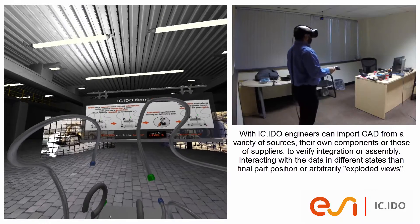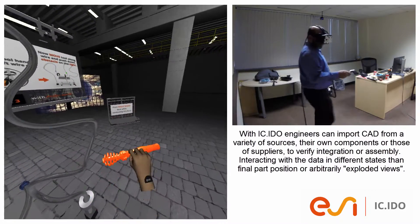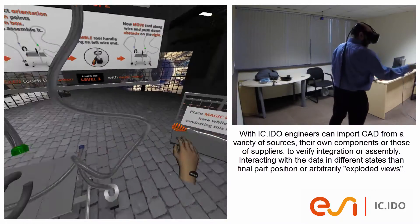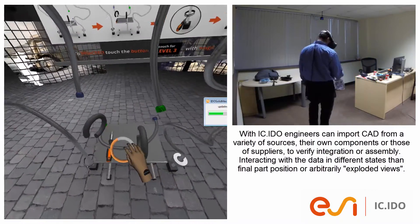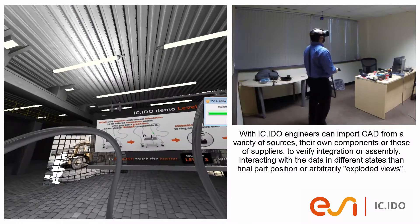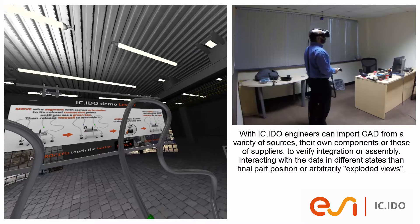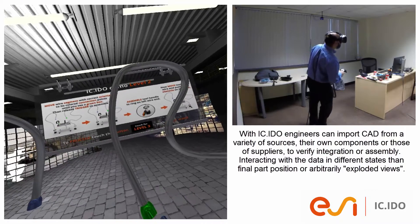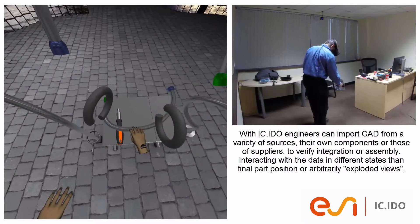What if you had to validate disassembly of an alternator or a washer fluid bottle without having a physical prototype? With ICI-DO, engineers can import CAD from a variety of sources — their own components or those of suppliers — to verify integration or assembly, interacting with the data in different states than the final part position or arbitrarily exploded views.